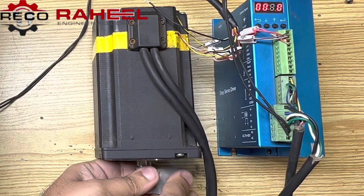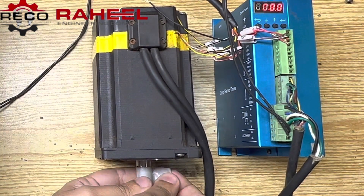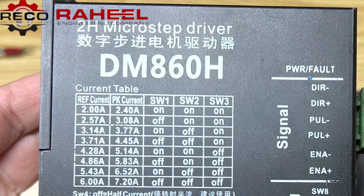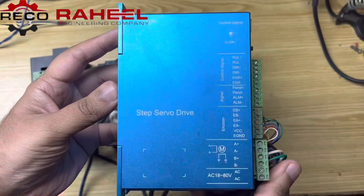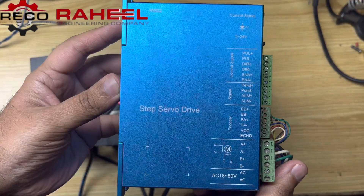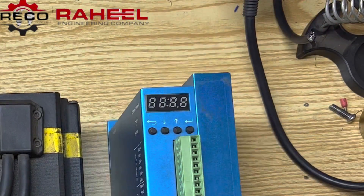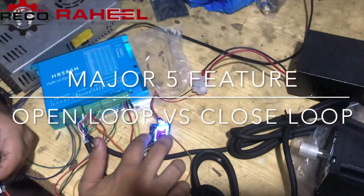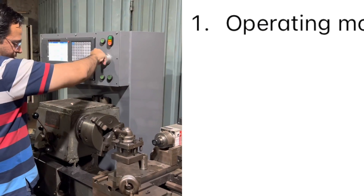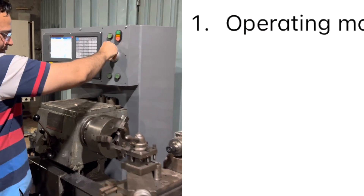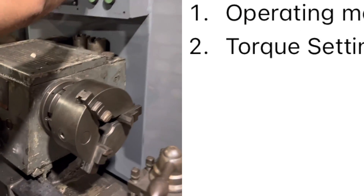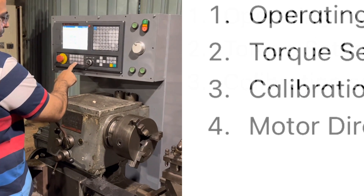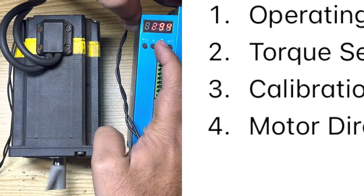Now we will talk about the features of both types of steppers. For this, we have the DM860H as the open loop driver and the step servo with display as the closed loop. We will study five main features of both types: number one — operating mode, number two — torque setting, number three — calibration setting, number four — motor direction, and number five — self-test mode.